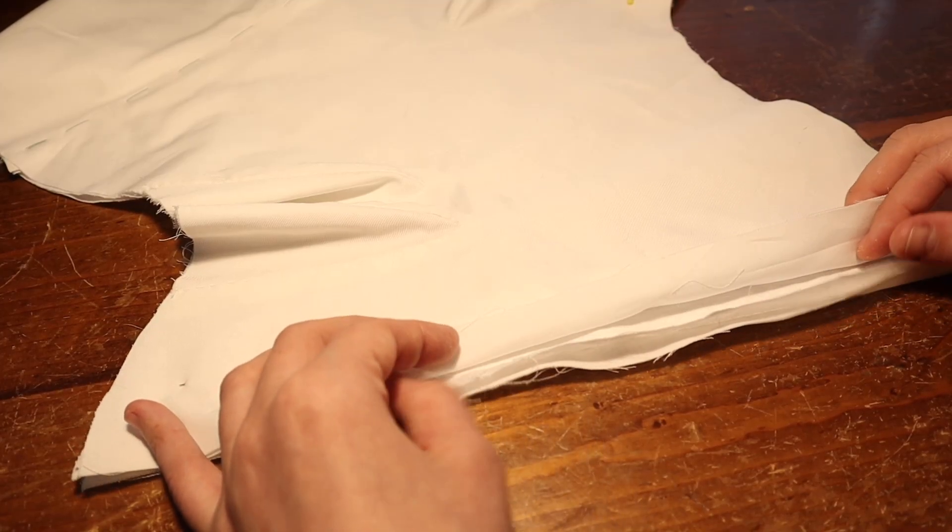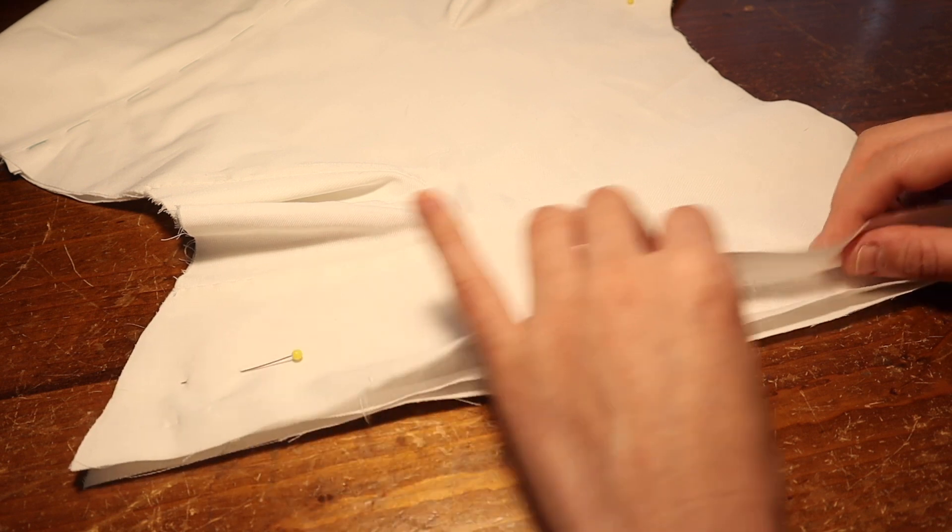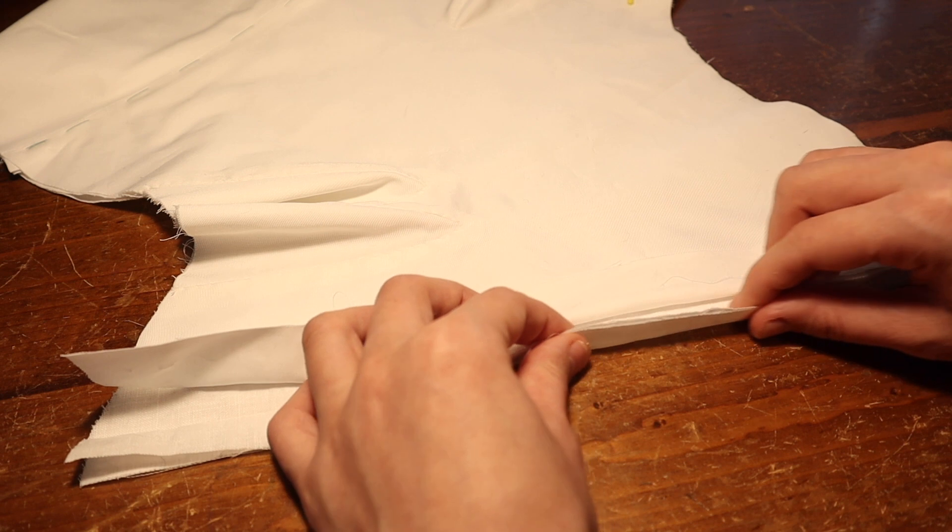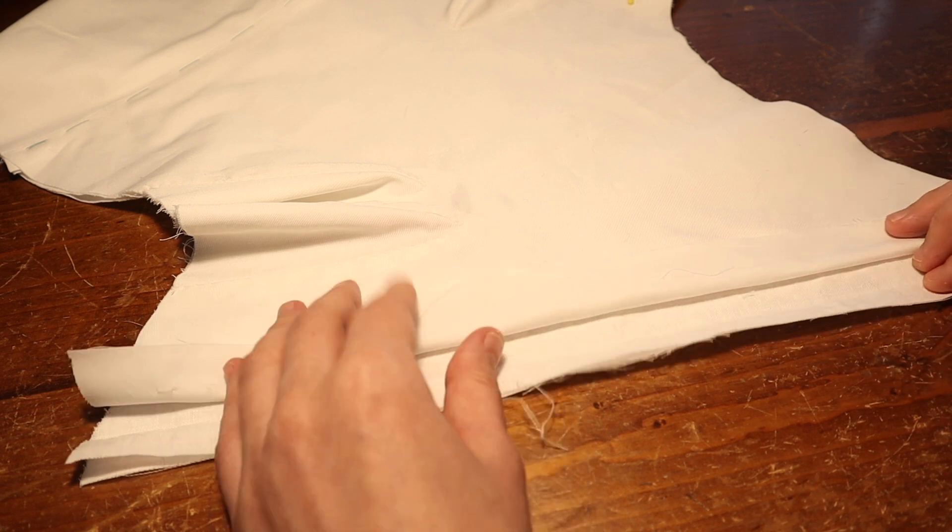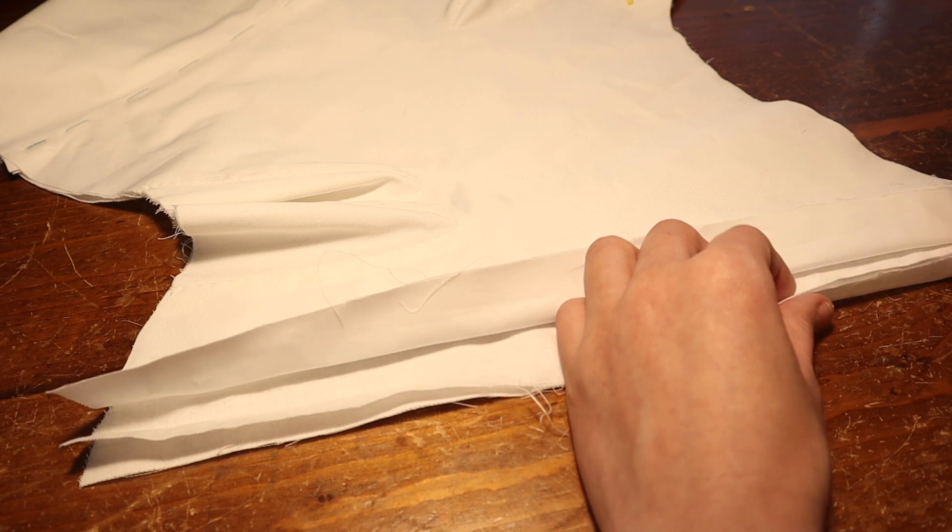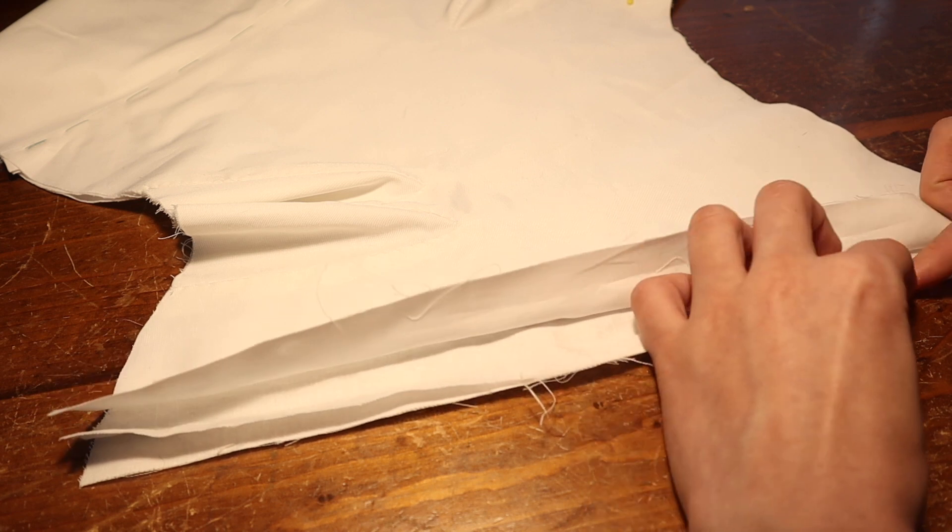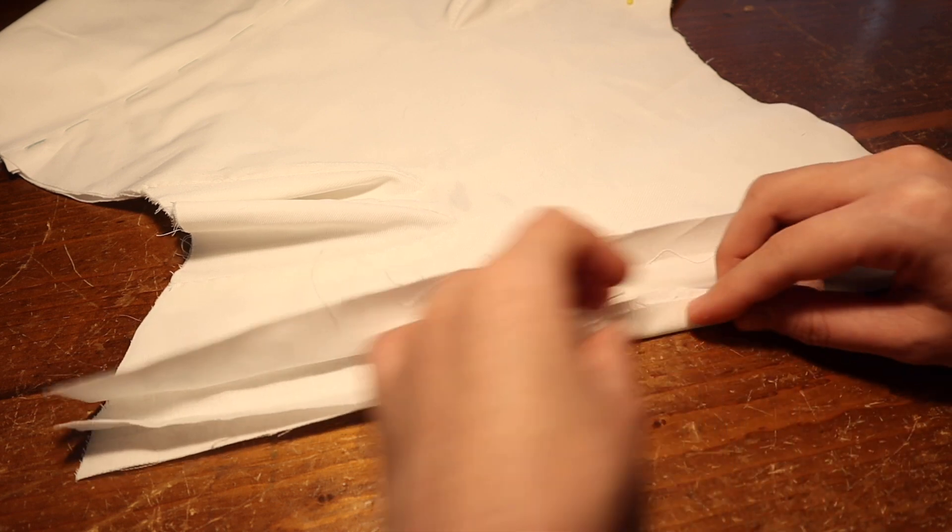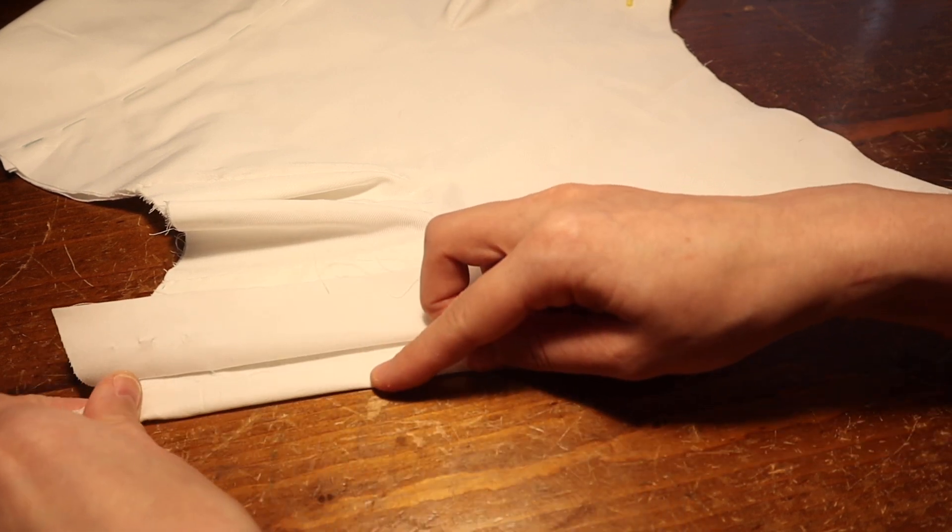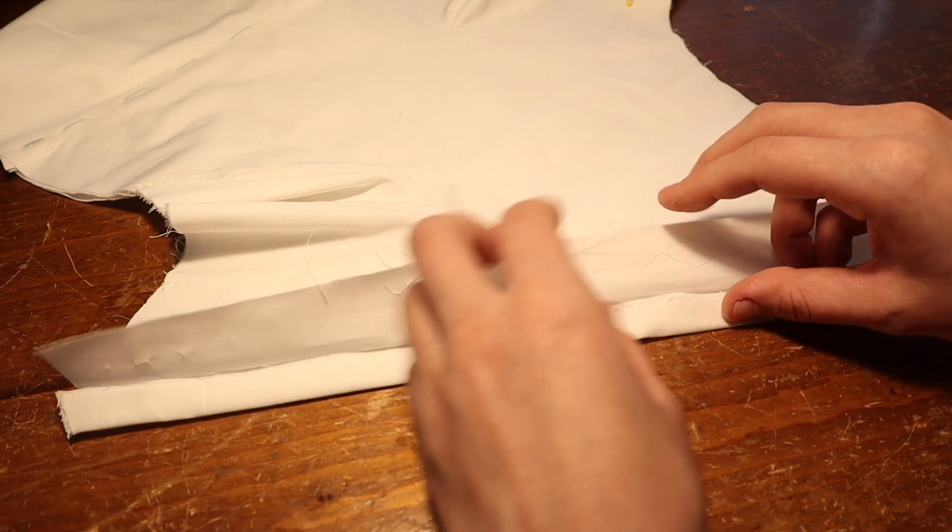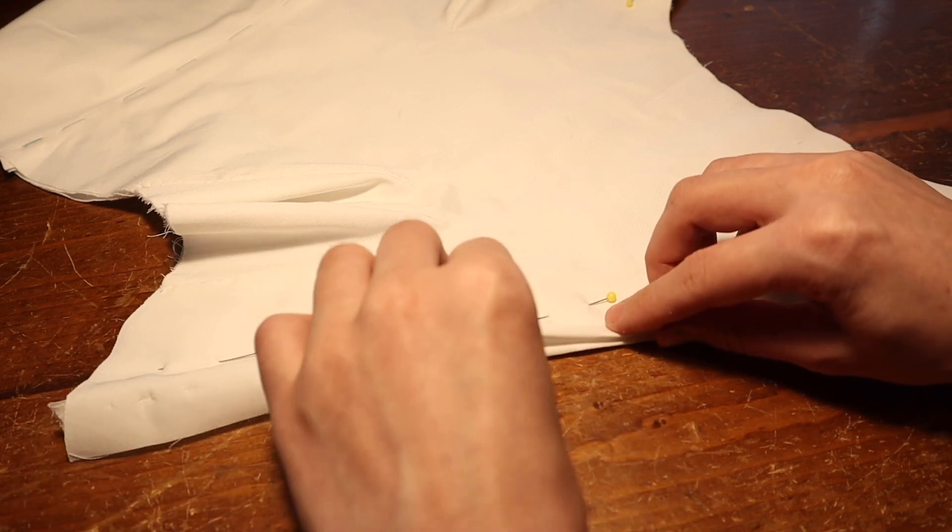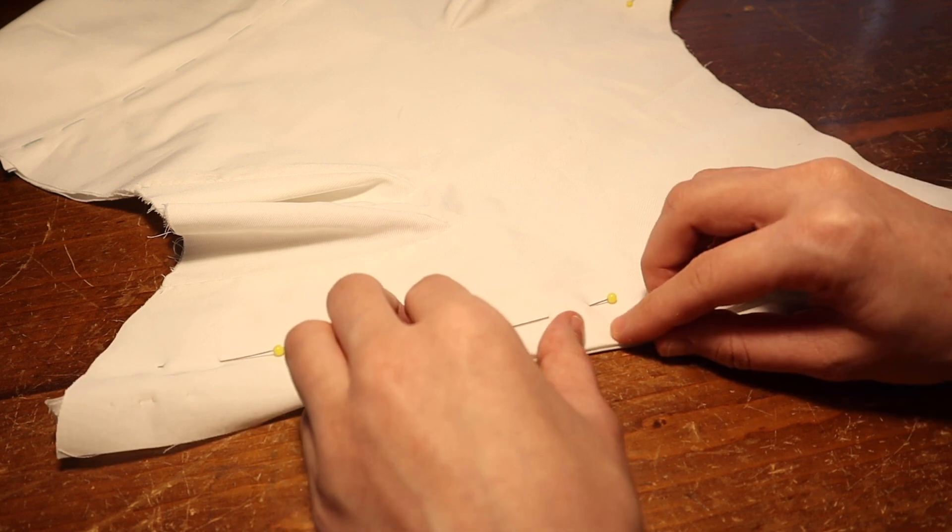Now I'm going to finish the center back edges. Here we have the stays with the lining up and the outer layer facing towards the table. I'm going to take the outer layer and the interlining, treating them as one, and fold the seam allowance to the inside of the stays. And I'm just giving that fold a bit of a finger press as I go along.